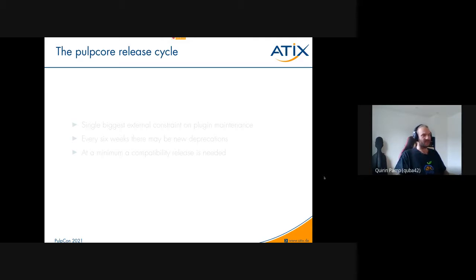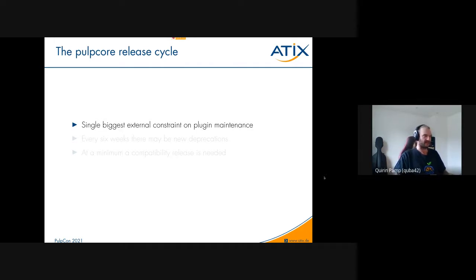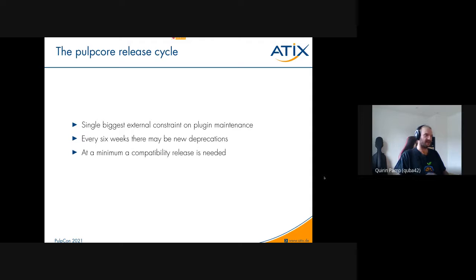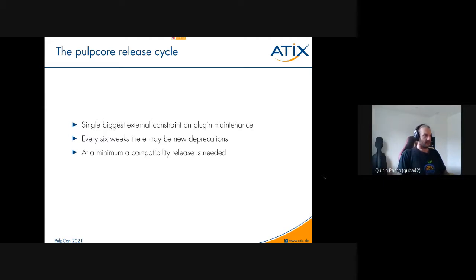The Pulp core release cycle — there's a new Y release roughly every six weeks — is the single biggest external constraint on plugin maintenance. Every six weeks there may be new deprecations or breaking changes. And even if there aren't, at a minimum I need to do a compatibility release to declare compatibility against the new Pulp core version, or at least against the next Pulp core version up.